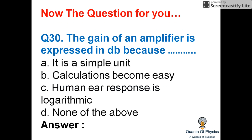A question for you: the gain of an amplifier is expressed in decibels because — (a) it is a simple unit, (b) calculations become easy, (c) human ear response is logarithmic, or (d) none of the above. Please comment your answer.